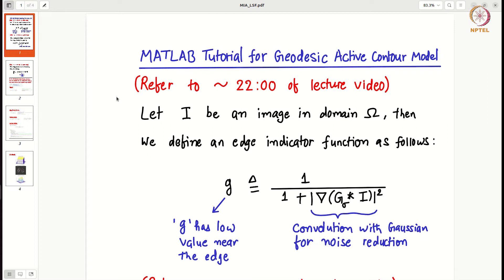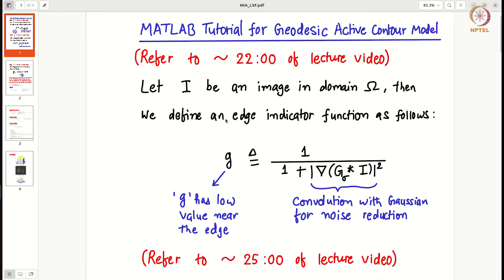In this method an edge indicator function is first defined because it is used in the energy functional. Here the edge indicator function is 1/(1 + |∇(Gσ * I)|²). You have already seen this thing earlier. Given an image, we use this Gaussian blurring to widen the potential energy well.